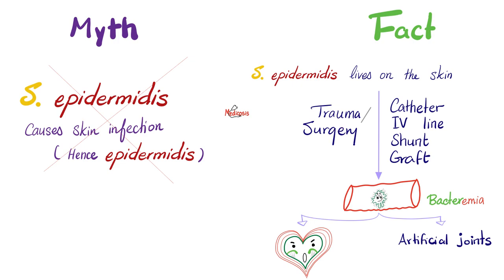...better with a catheter, IV line, central venous line, shunts, grafts — you name it — Staph epidermidis is gonna leave the skin and enter and invade deep into your body thanks to the wound or the graft. And before you know it, Staph epidermidis is in the blood. We call this bacteremia.